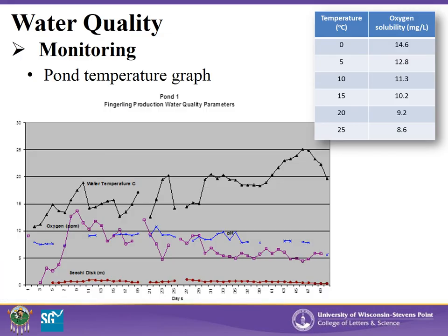The most important physical variable affecting dissolved oxygen concentrations in ponds is water temperature. Water temperature throughout the summer influences the water's oxygen capacity — its ability to hold oxygen. Typically, we are rearing walleyes at 65 to 90 degrees Fahrenheit in Wisconsin ponds. The amount of oxygen available at these temperatures is much lower than at colder temperatures, due to the solubility level of oxygen, as shown in the table. This graph shows fluctuations in water quality over the course of the summer, collected at UWSP and NADF. Throughout the summer, as water temperature increases, oxygen levels decrease.